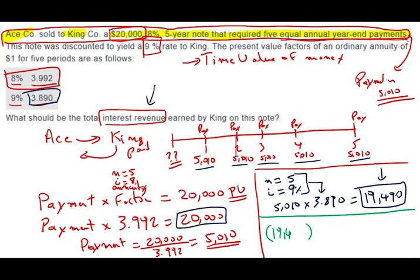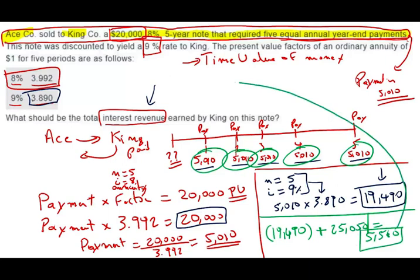Well, the interest on this note is if King is paying $19,490, this is negative. King would receive in total five payments of $5,010, which equals $25,050. Therefore, King would earn in interest $5,560. That's how much King will earn in interest, and that's our answer. How much would King earn in interest revenue? $5,560.